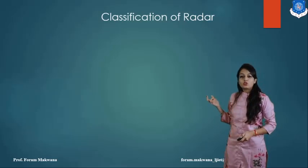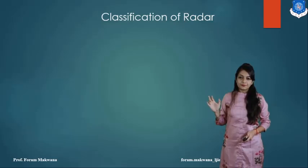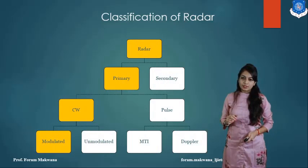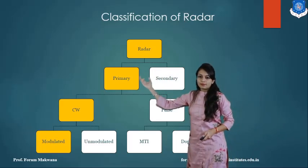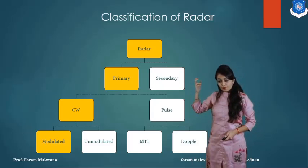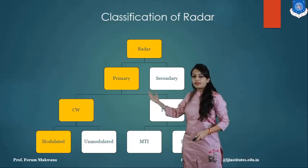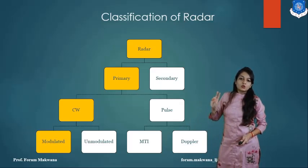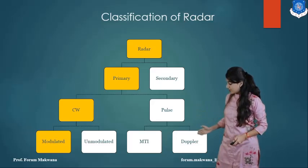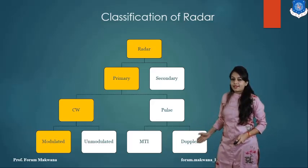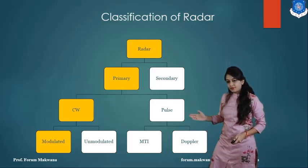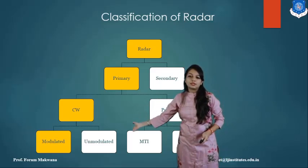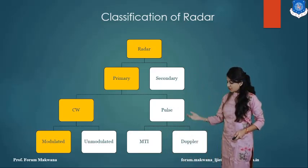The RADAR is also classified. The basic classification of RADAR: primarily, RADAR is classified as the RADAR indicator and the RADAR. Then, RADAR is further classified as continuous RADAR and pulsed RADAR. This is the classification of RADAR.